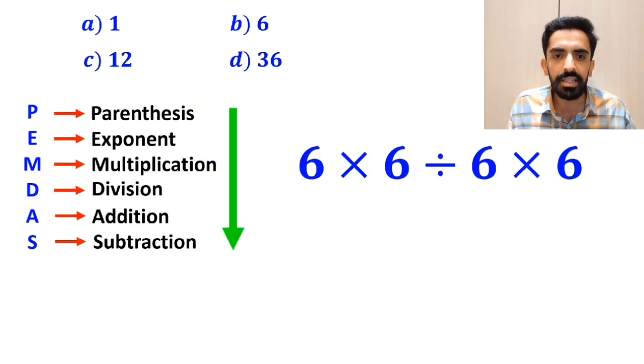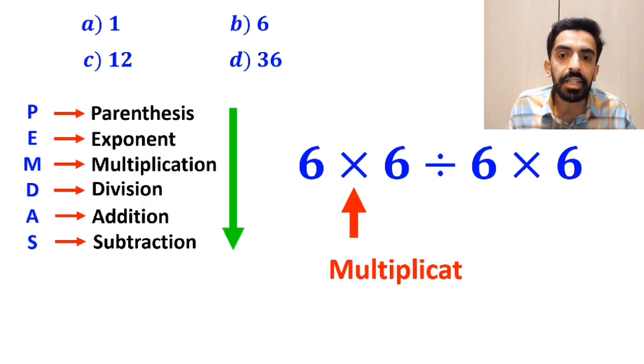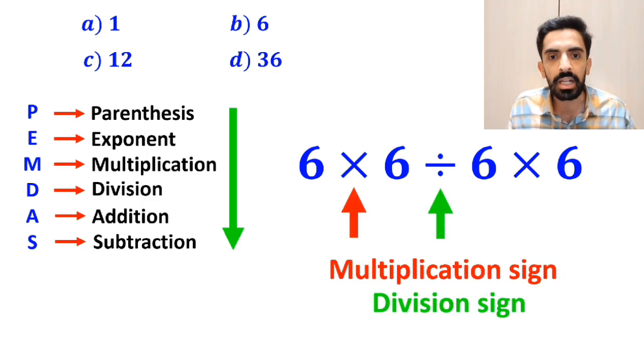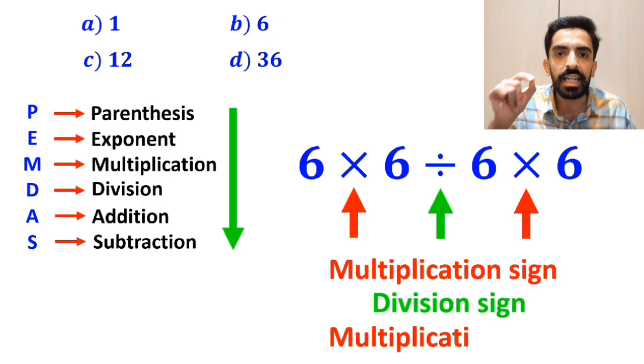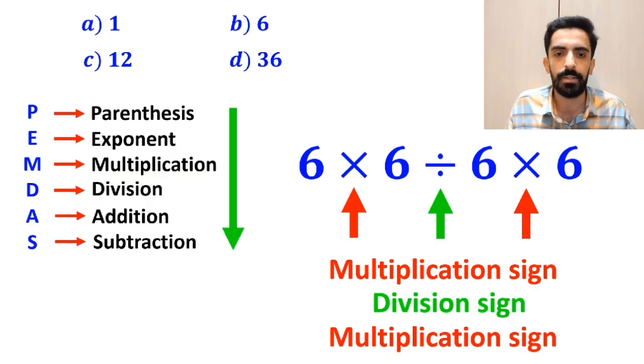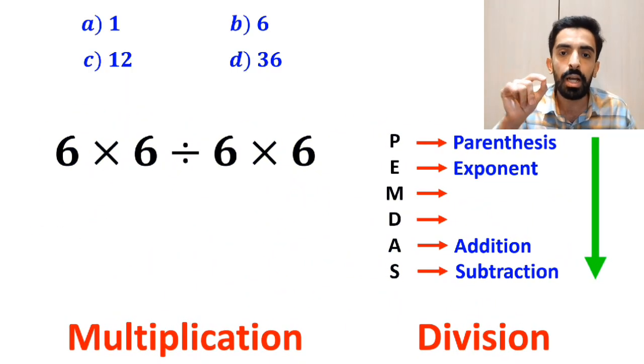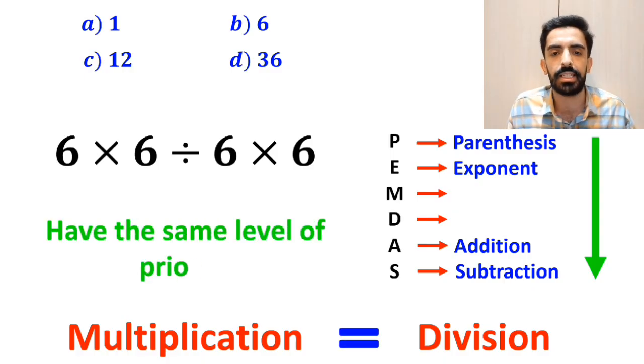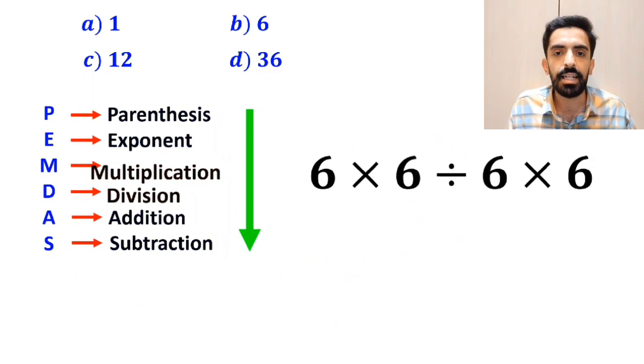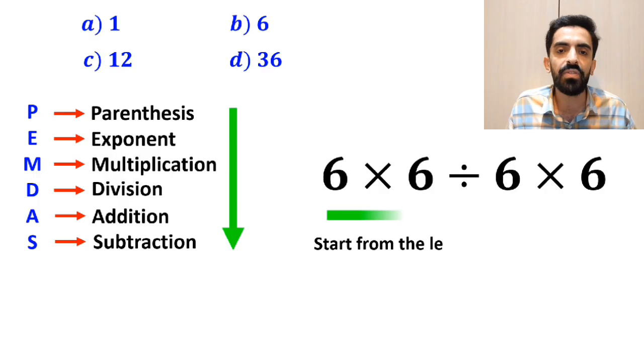As you can see on this screen, we have a multiplication sign, then a division sign, and again another multiplication sign in this expression. It's really important to understand that in the PEMDAS rule, multiplication and division have the same level of priority.